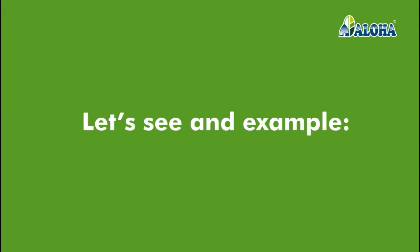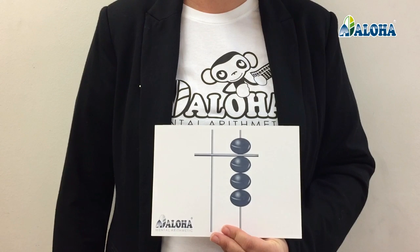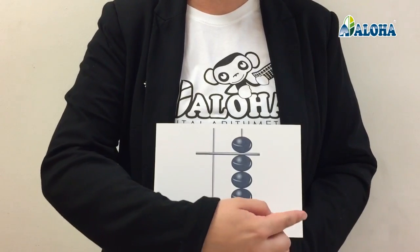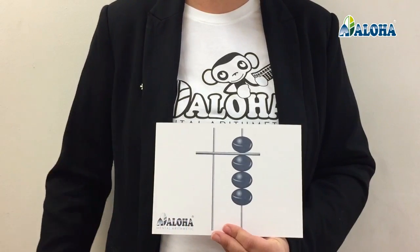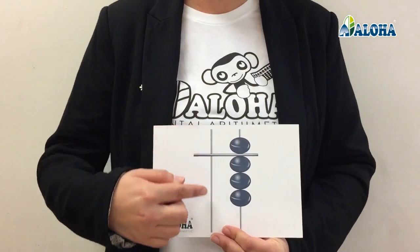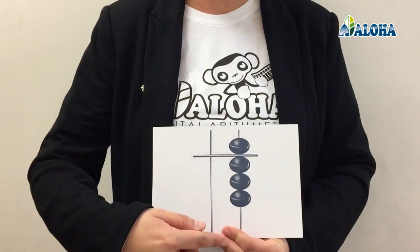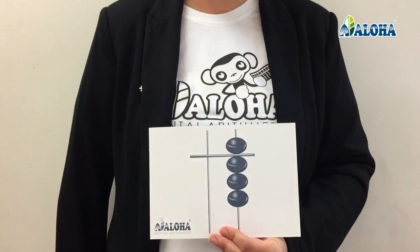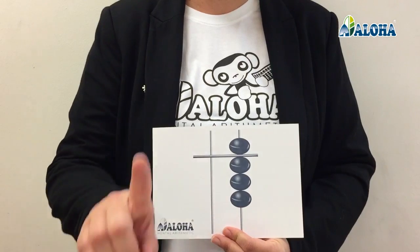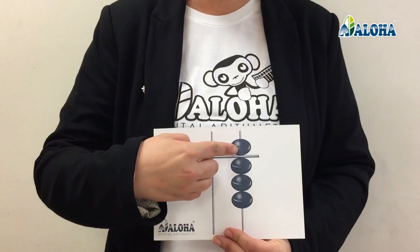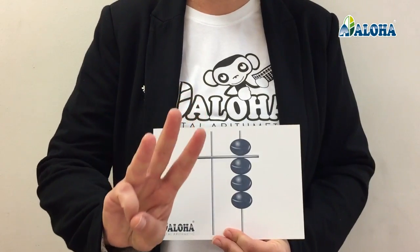Let's see an example. In order to find out the concerned number, we must observe the card and identify what number is shown on the basis of the displayed bits and columns. For instance, in this example, we can observe that in the unit's column there is an upper bit worth 5 and 3 lower bits that are worth 1 each.